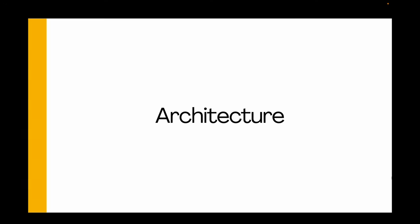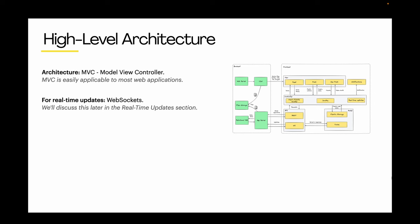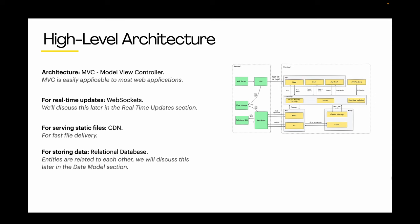Having discussed the requirements, we are now ready to begin. First, we will talk about high-level design. For architecture, we will use the MVC pattern – model, view, controller – which is good for describing a typical web application. For real-time updates, we will use WebSockets. For serving static files, we will use CDNs. And for storing data, we will use a relational database, because entities in our data model are closely coupled with each other.